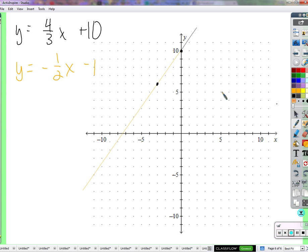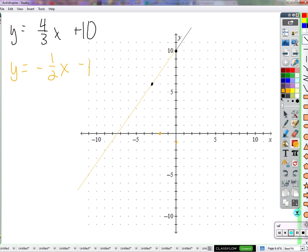Next, we've got a y-intercept of negative 1 and a slope of negative 1 half. I'm going to go back 2 and up 1. Hopefully I've drawn my line pretty well.